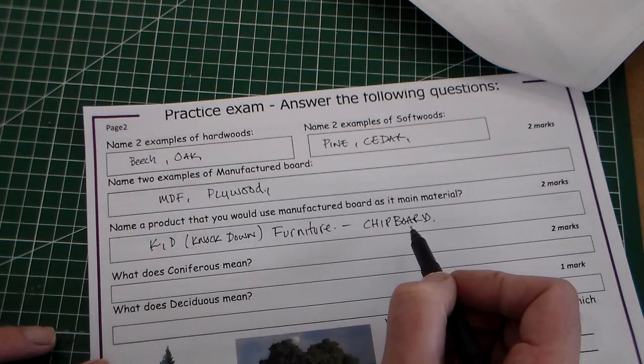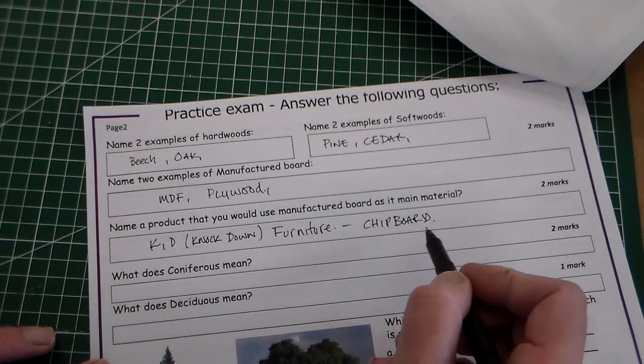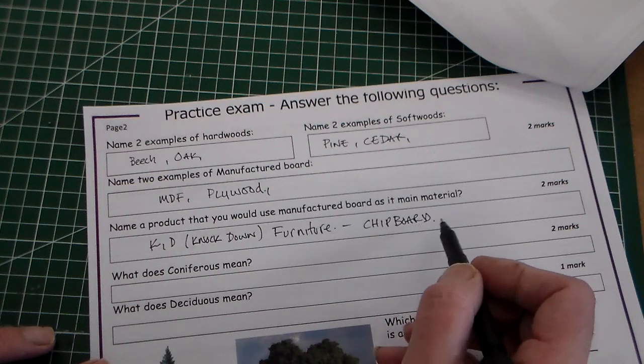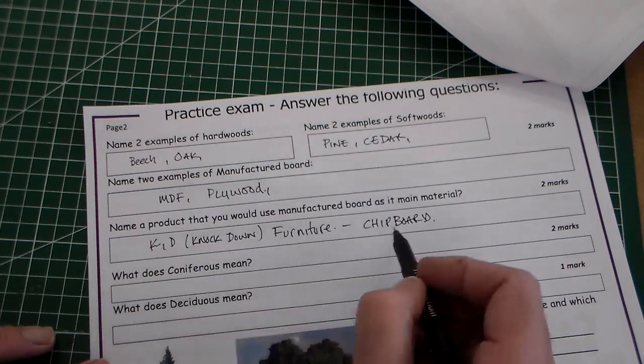I've just put a different one anyway. So we've said knock down furniture chipboard. You could say self-assembly furniture chipboard. MDF would have gotten you marks as well. So it's two marks, one for the material and one for the example.